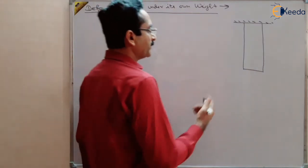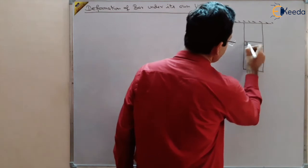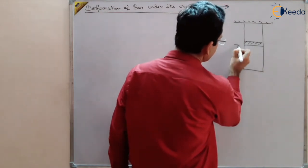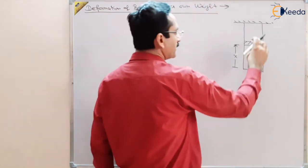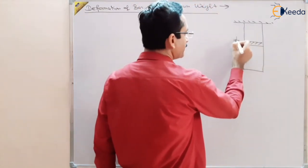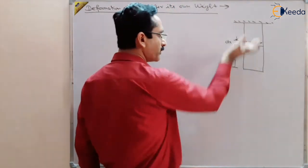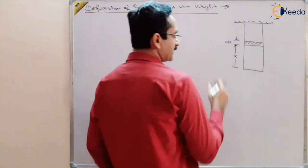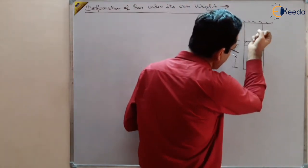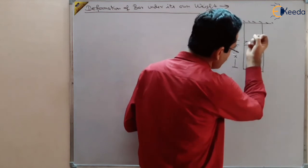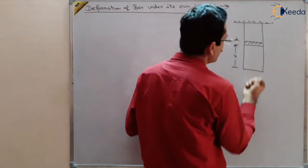Let us take a small element dx at a certain distance x from the bottom edge. Now you can see that different parts of the body are trying to deform this body in a different manner.